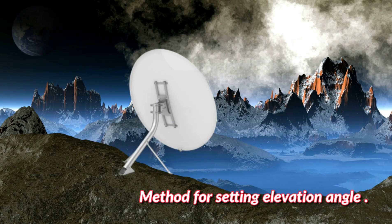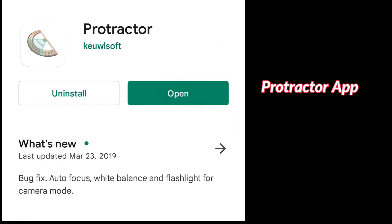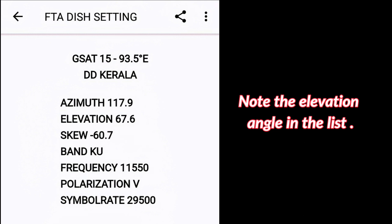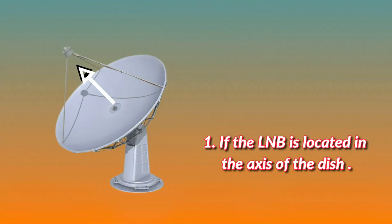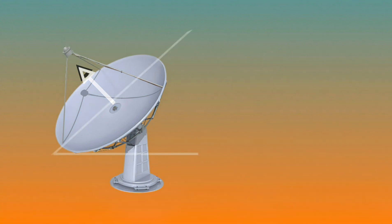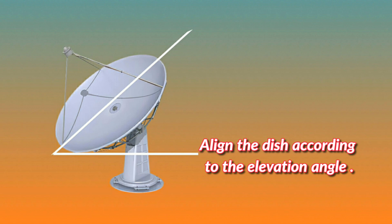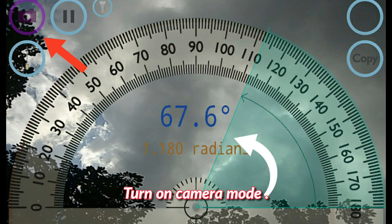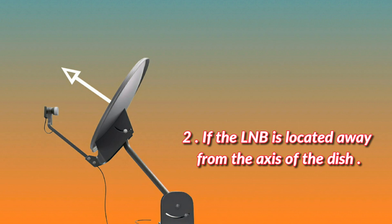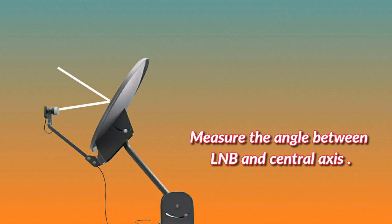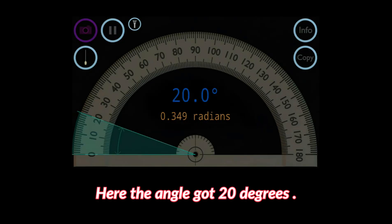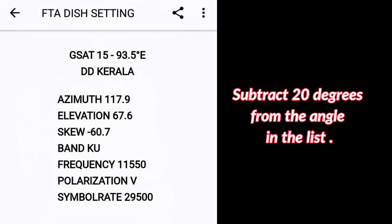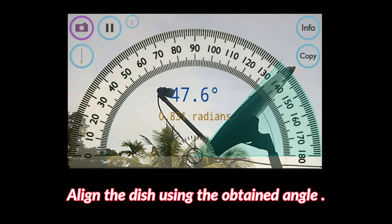Method for setting the elevation angle using the Protractor app: Note the elevation angle from the list. If the LNB is located on the axis of the dish, align the dish according to the elevation angle using the camera mode of the Protractor app. If the LNB is located away from the axis, measure the angle between the LNB and the central axis — for example, if this angle is 20 degrees, subtract 20 degrees from the listed angle and align the dish using the resulting value.